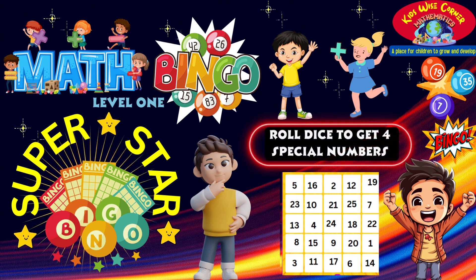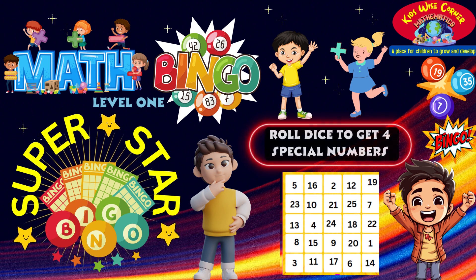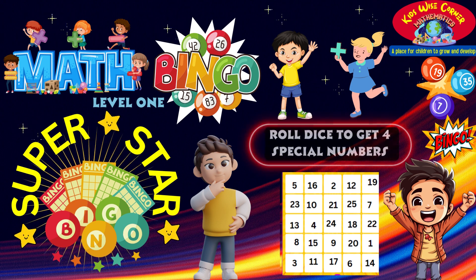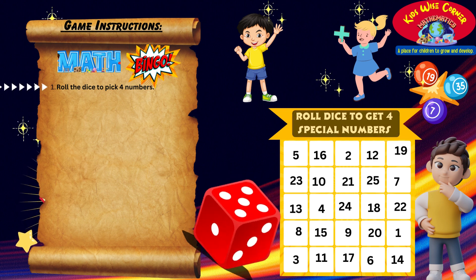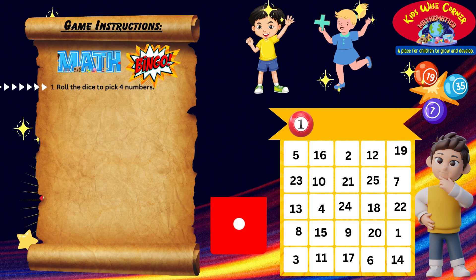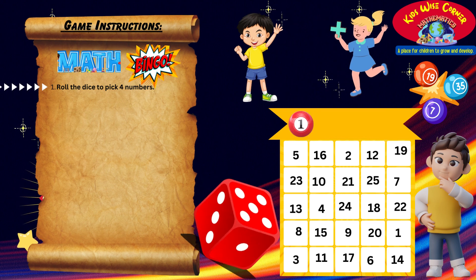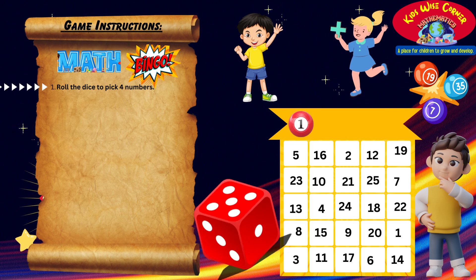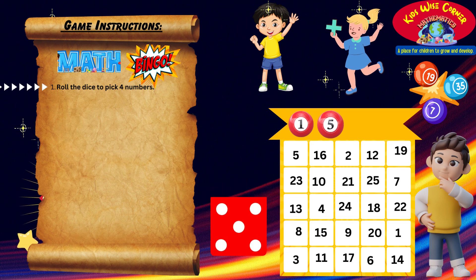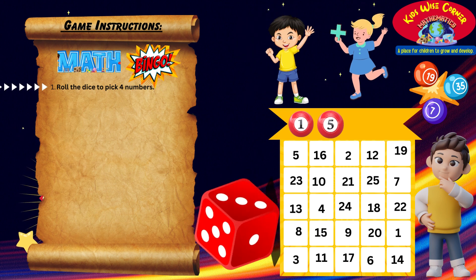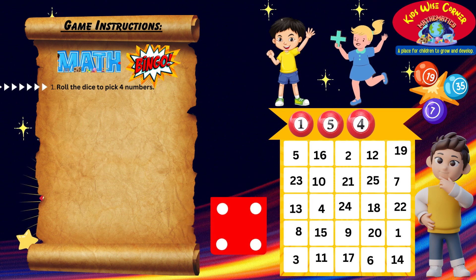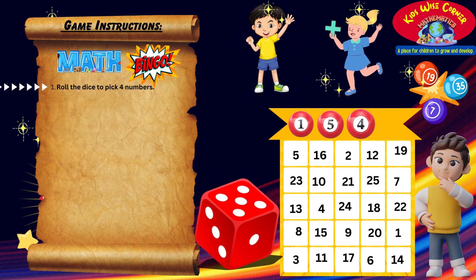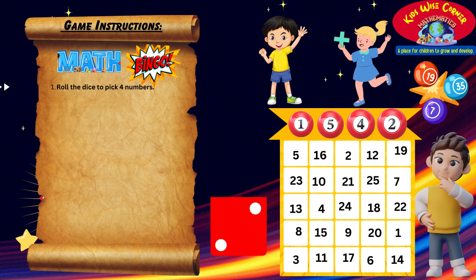Here's how to play. Roll the dice four times to get four special numbers. The first number we rolled is one. Roll the dice again. The second number is five. Roll the dice once more. The third number is four. Roll the dice for the last time. The fourth number is two.